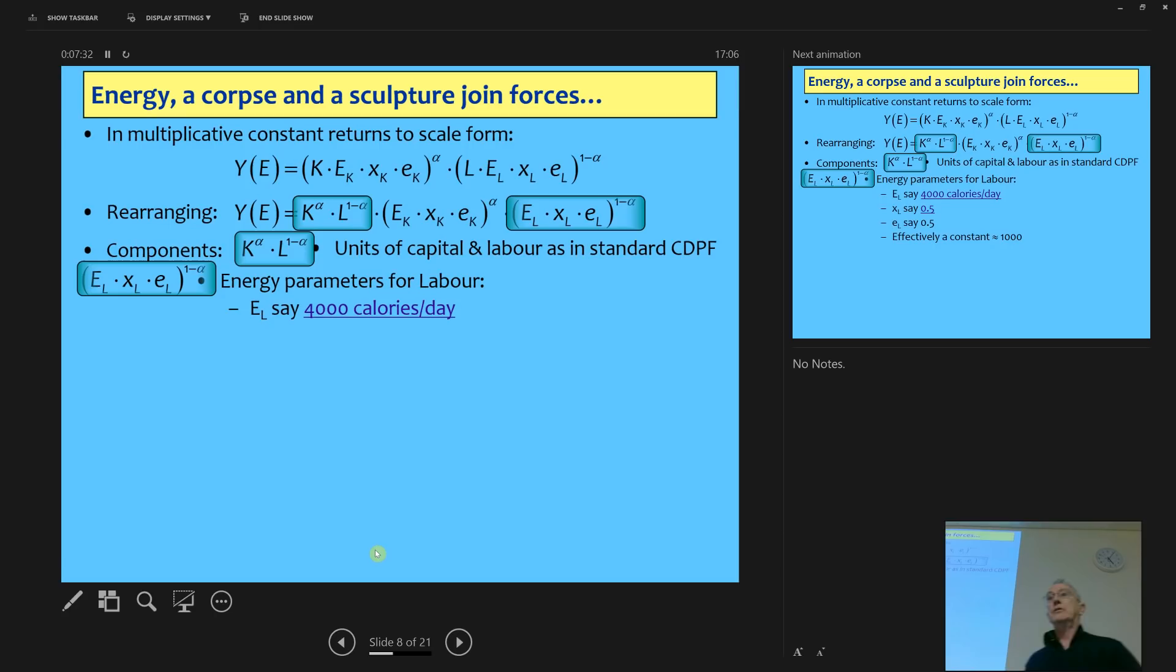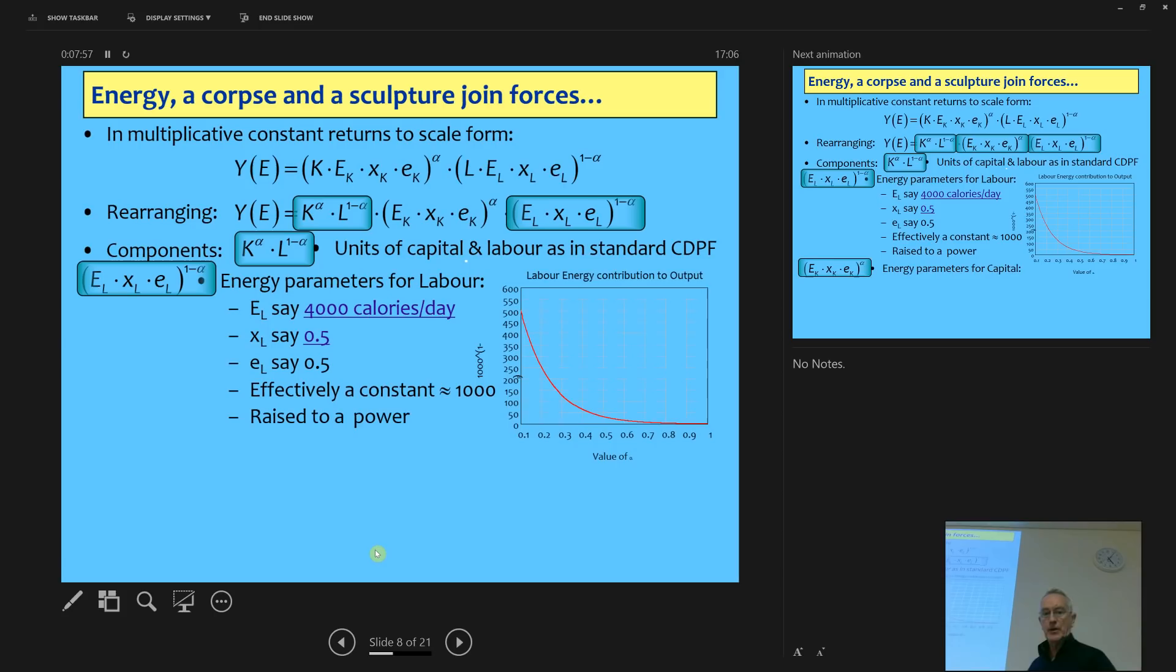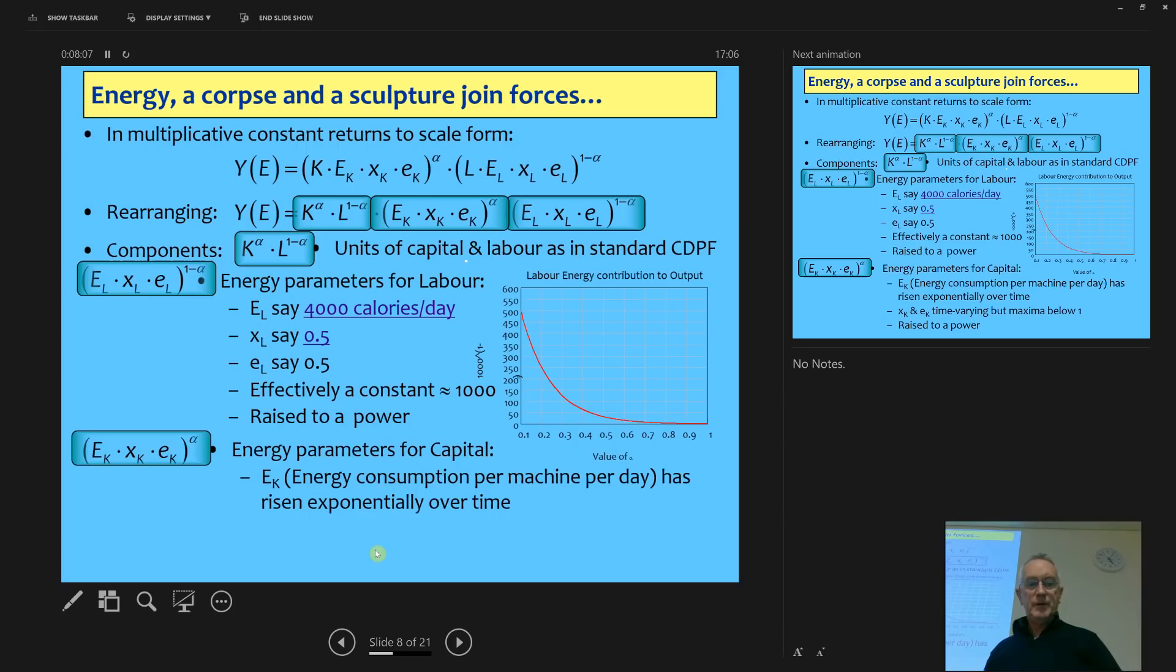So putting it in the form that's the Cobb-Douglas production form, a multiplicative form, which makes sense. Labor multiplies the productivity capital and vice versa. You get this expression. It doesn't take much work to rearrange it and get this one. And what you have there, of course, the components of that, are the classic Cobb-Douglas production function, the units of capital and labor as in a standard production function, the energy input to labor, the useful work output of labor, and the energy parameters there, you can pretty much, you know, rule of thumb does fine, maybe 4,000 calories a day, whatever that works out in megajoules. I don't know, but you convert it to megajoules to make it the same as the factor for capital. Let's say the exergy energy ratio is 0.5. Eat 4,000 calories, you can do 2,000 calories worth of work. Let's say the efficiency is 0.5. This is all just arbitrary numbers.